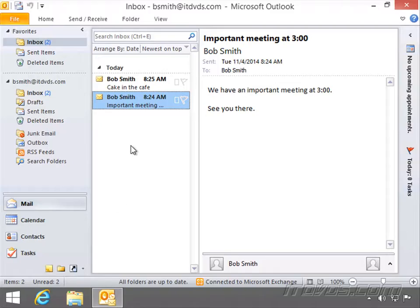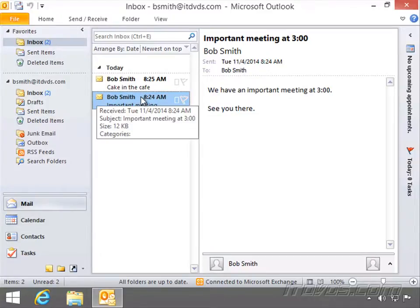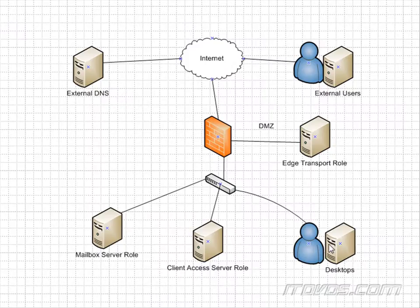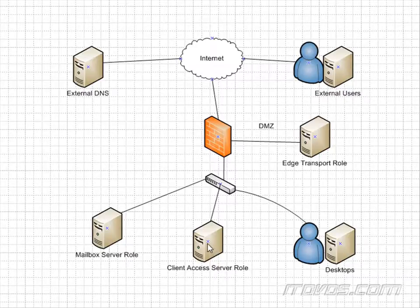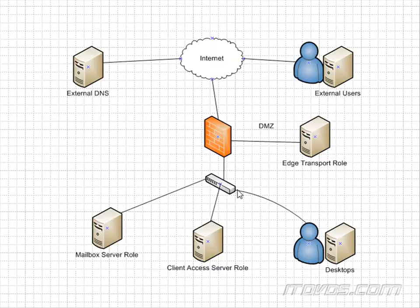Let's take a simple example. I'm Bob Smith, I open up my desktop, I'm on my internal network, open up Outlook and I can see my emails. What happened when I opened up Outlook? It connected to the Client Access Server, and then the Client Access Server connected to the appropriate Mailbox Server to get all the emails and all the data, send that information back to the Client Access Server, and then the Client Access Server sent it back to me at my desktop.